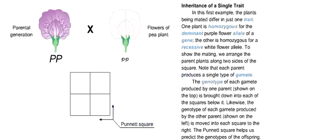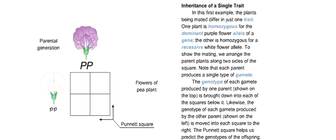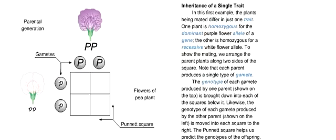In this first example, the plants being mated differ in just one trait. One plant is homozygous for the dominant purple flower allele of a gene. The other is homozygous for a recessive white flower allele. To show the mating, we arrange the parent plants along two sides of the square. Note that each parent produces a single type of gamete.